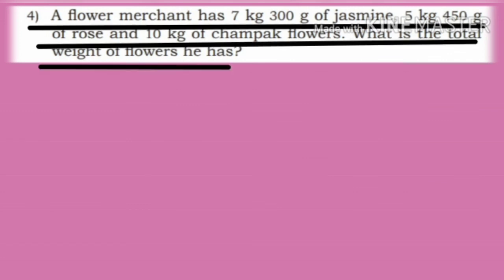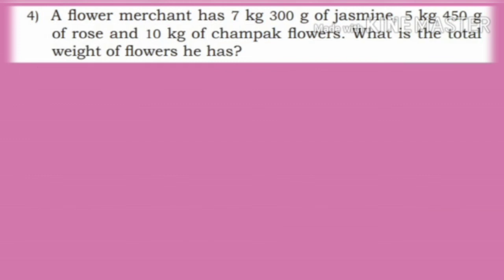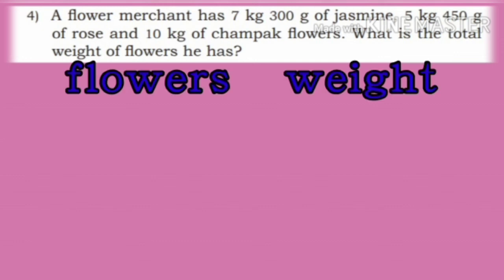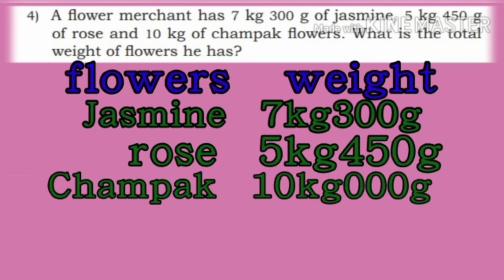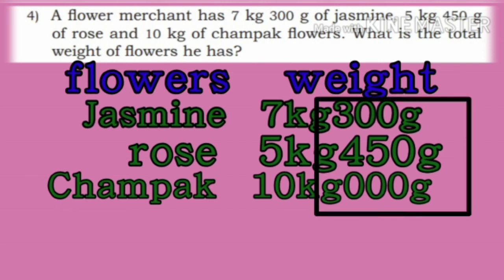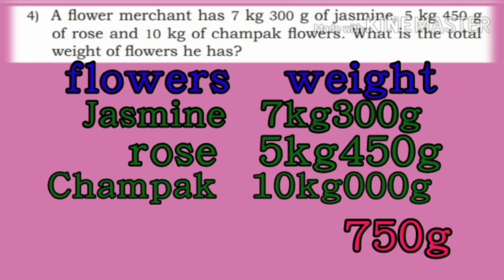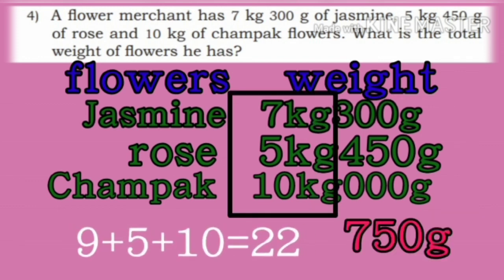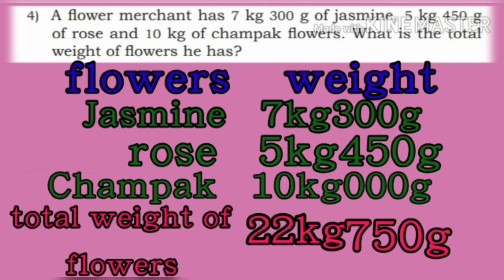Fourth question: A flower merchant has 7 kg 300 grams of jasmine, 5 kg 450 grams of rose, and 10 kg of champak flowers. Add grams first: 300 plus 450 is 750 grams. Now add kg: 7 plus 5 plus 10 is 22. So total weight of flowers is 22 kg 750 grams.